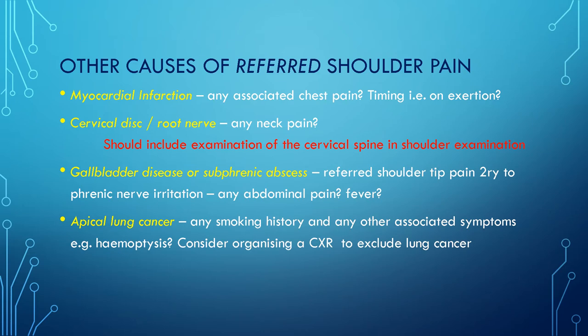A colleague sadly made a delayed diagnosis because a patient presented with shoulder pain and they focused on that. They did do an X-ray, but it didn't cover enough of the lungs, and they missed an apical lung cancer. So if someone has a strong smoking history, is over the age of 45, has any other symptoms, or you suspect possible cancer, it's worth arranging a chest X-ray too.